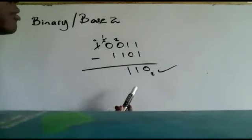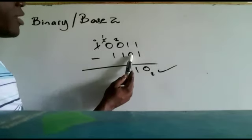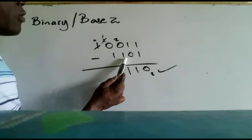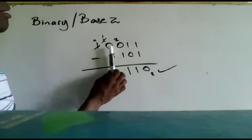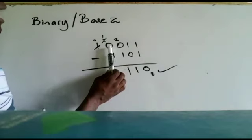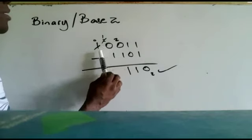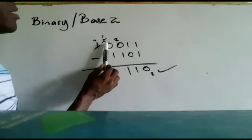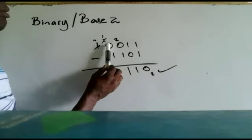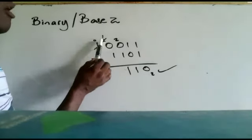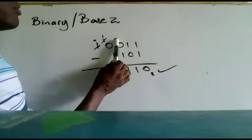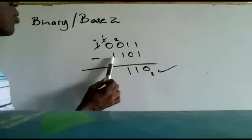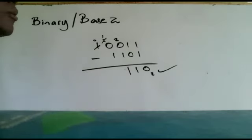To recap: 1 minus 1 is 0, 1 minus 0 is 1, 0 minus 1 requires borrowing. When we borrow 1 from the column to the left, it arrives as 2 in the current column, because the left column is two times the right. So 2 minus 1 is 1, and 1 minus 1 is 0. That's how adding and subtracting work in base 2 — thank you.